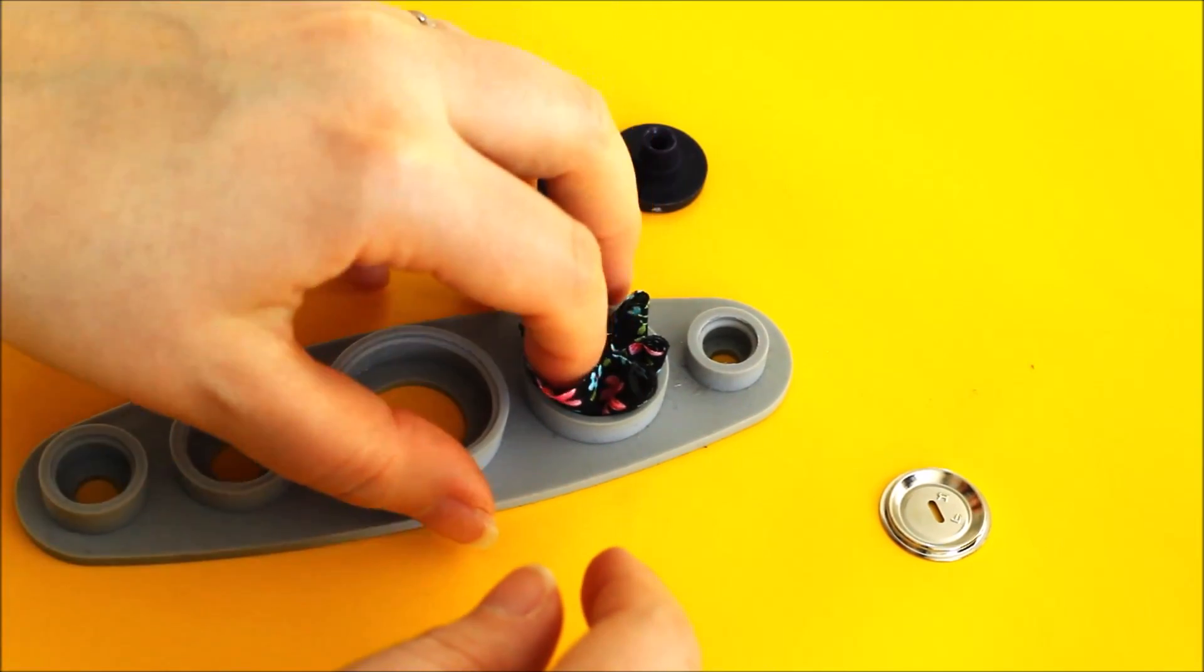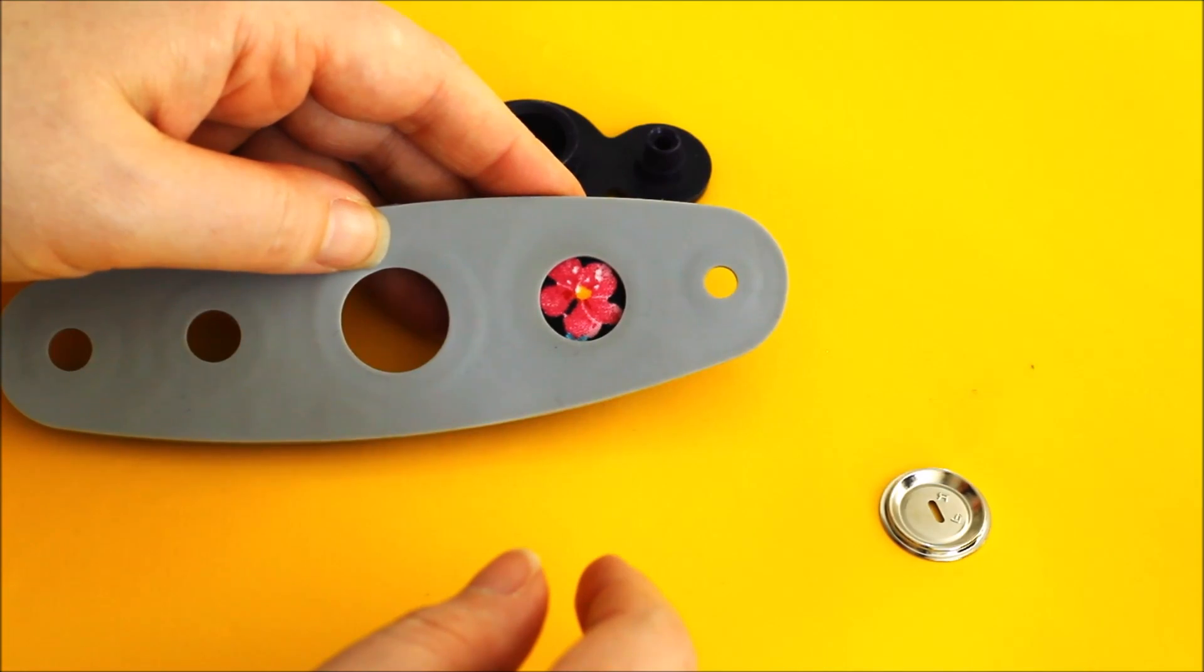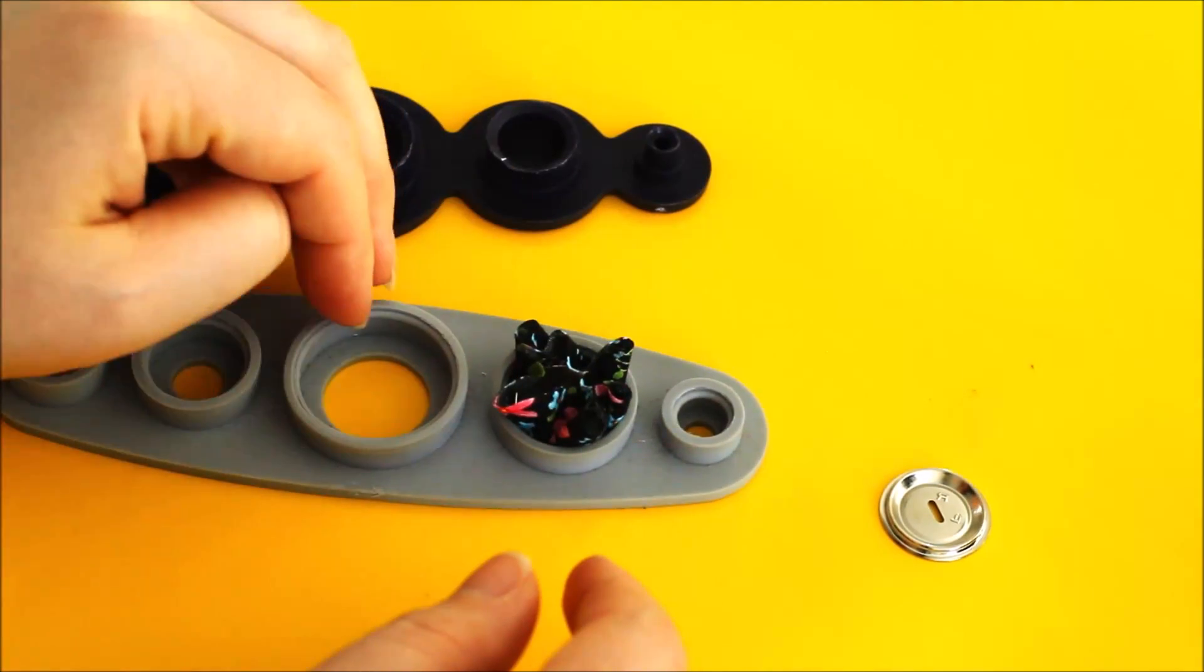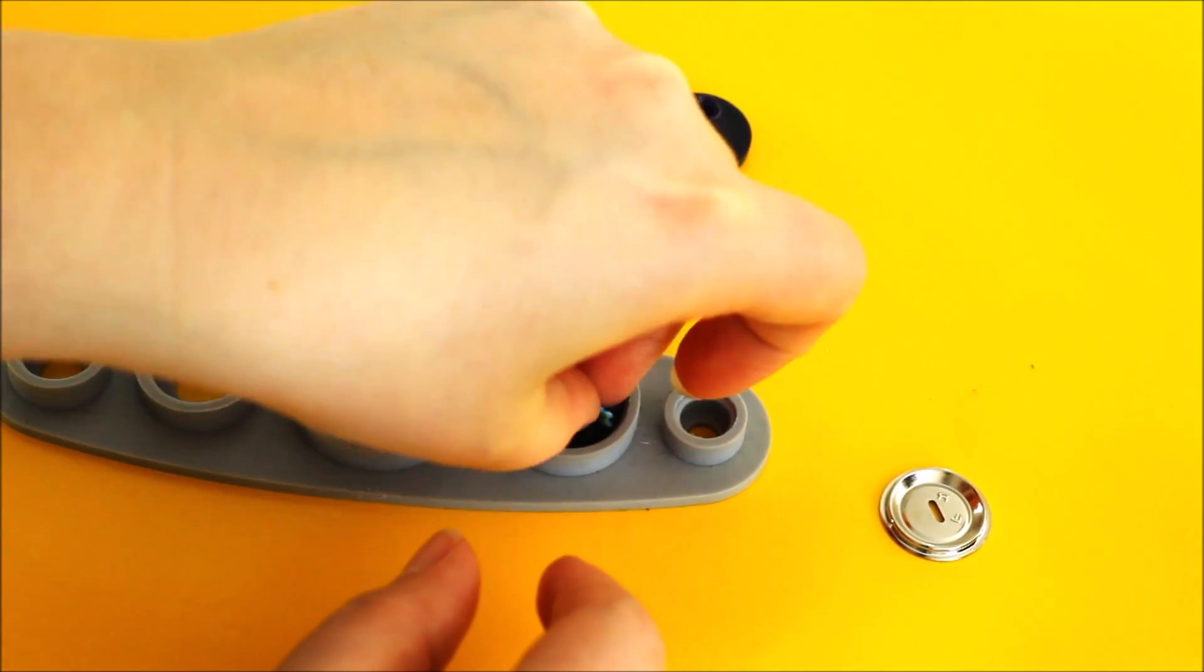Now, if you're not sure if you're in the right position or not, turn it over. It should sit perfectly. Then just push down this fabric around the outside so that it all scrunches up inside.